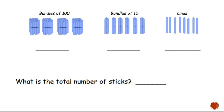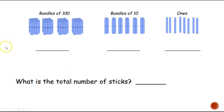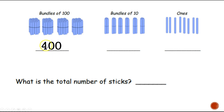I've got some bundles here — bundles of 100, bundles of 10, and a couple ones. Let's count how many bundles of 100 there are, and I want you to write out the number. Let's count them together: 1, 2, 3, 4. Did you write it down like this — four hundreds? Because these are bundles of 100 and there are four bundles, so we write it as four hundred.